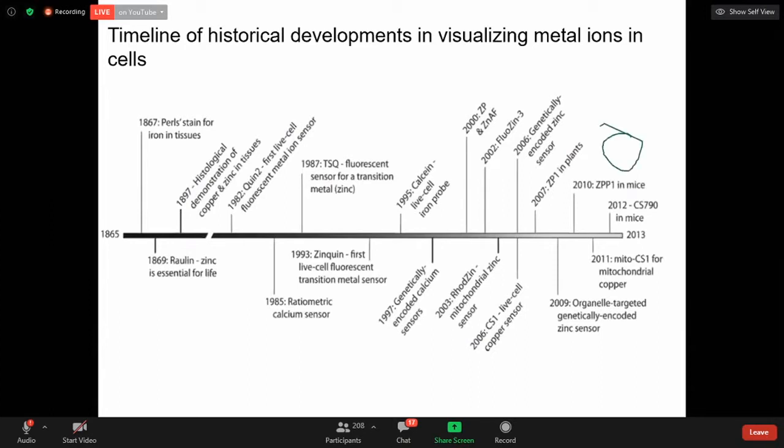This is the timeline of historical developments in visualizing metal ions in cells. So first, 1865 onwards the metal sensing developed with the first to develop ion sensors. And 1982 onwards people are trying to create new type of sensors. All the works have focused on transition metal sensing. Recent years they are trying to find heavy metal sensing. You can see zinc up to 2013, copper.